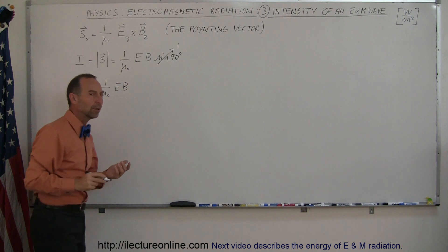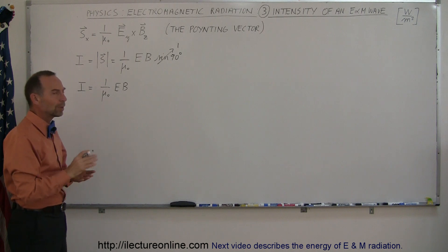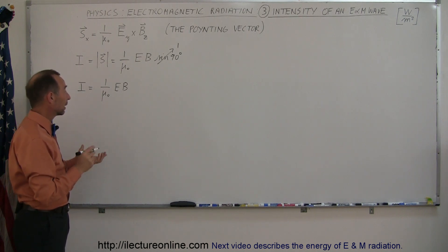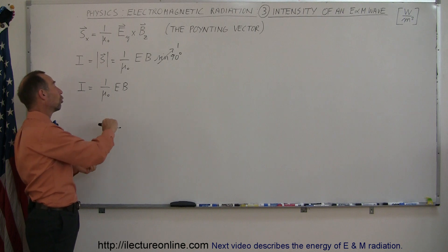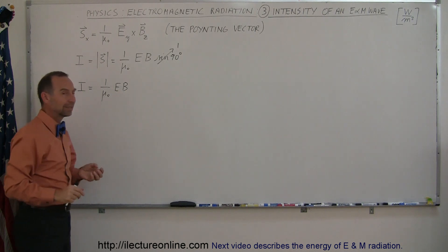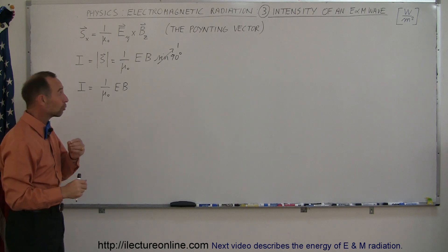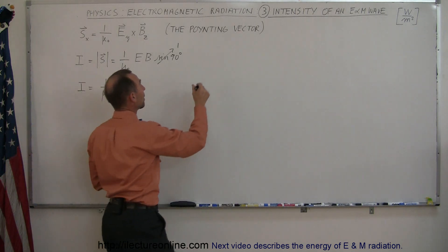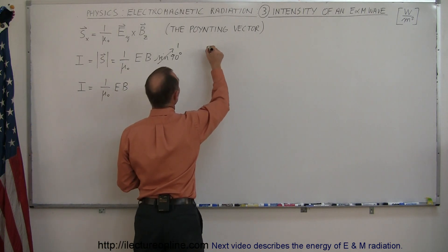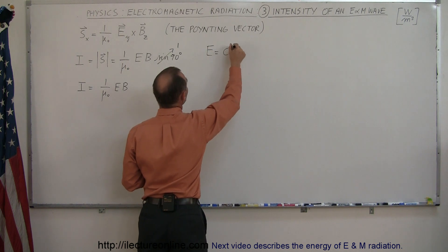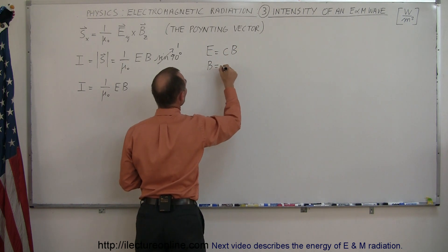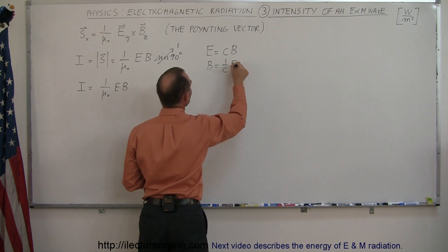Now, remember that there's a relationship between E and B, which is very handy to have, because sometimes we are not told what the oscillations are in both the electric field and the magnetic field. Sometimes they only give it to you in terms of the electric field. So then we remember that the electric field oscillations is equal to C times B, or B is equal to 1 over C times E.